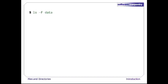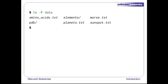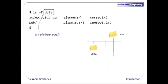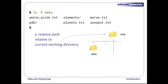Now let's run the command 'ls -F data', which tells ls to give us a listing of what's in our data directory. The output shows us that there are four text files and two directories. This hierarchical organization helps us keep our work organized. Notice how we spelled the directory name 'data' — since it doesn't begin with a slash, it's a relative path, interpreted relative to the current working directory.